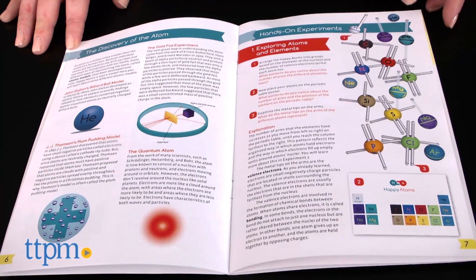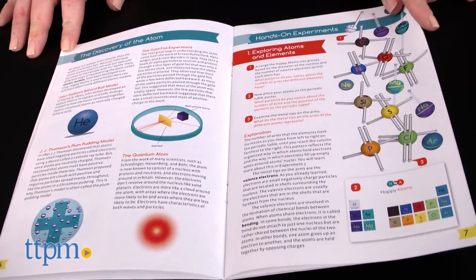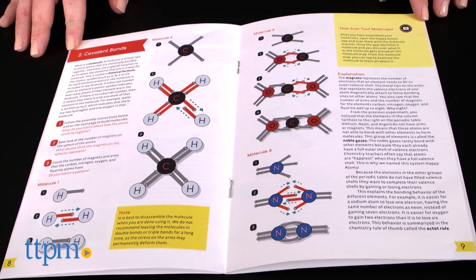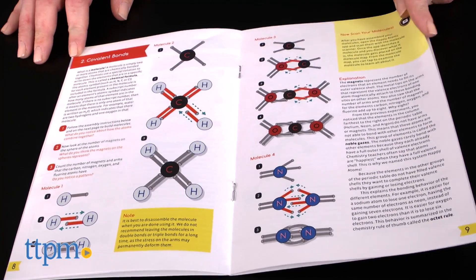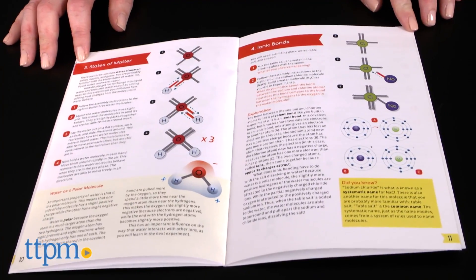The instruction booklet provides six different experiments to guide kids through building a variety of molecular models to give kids a visual understanding of electrons, bonding, states of matter, and more.